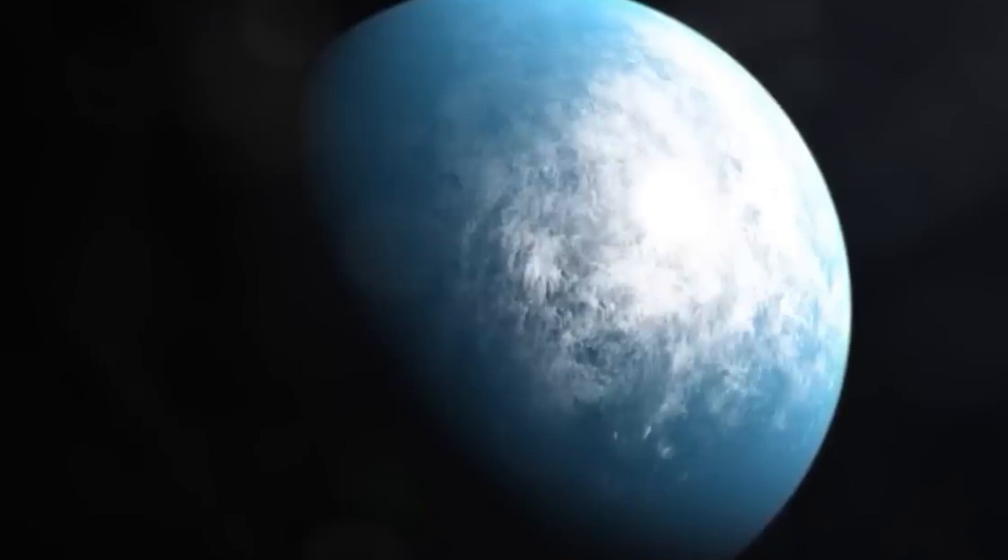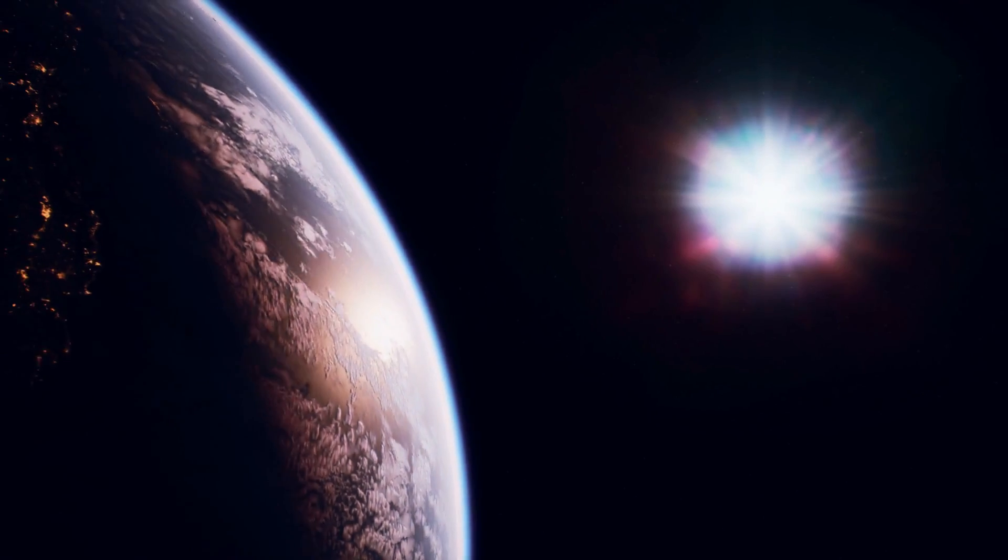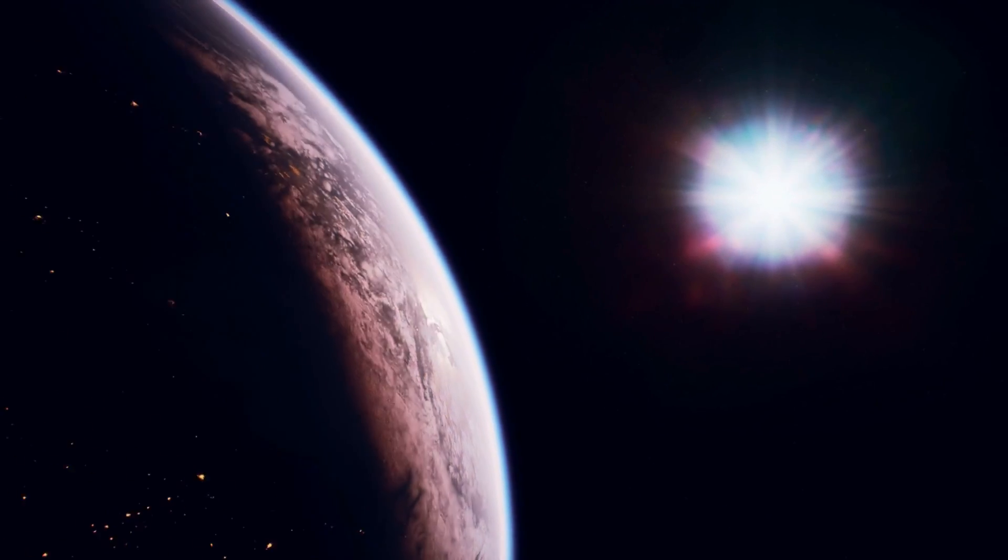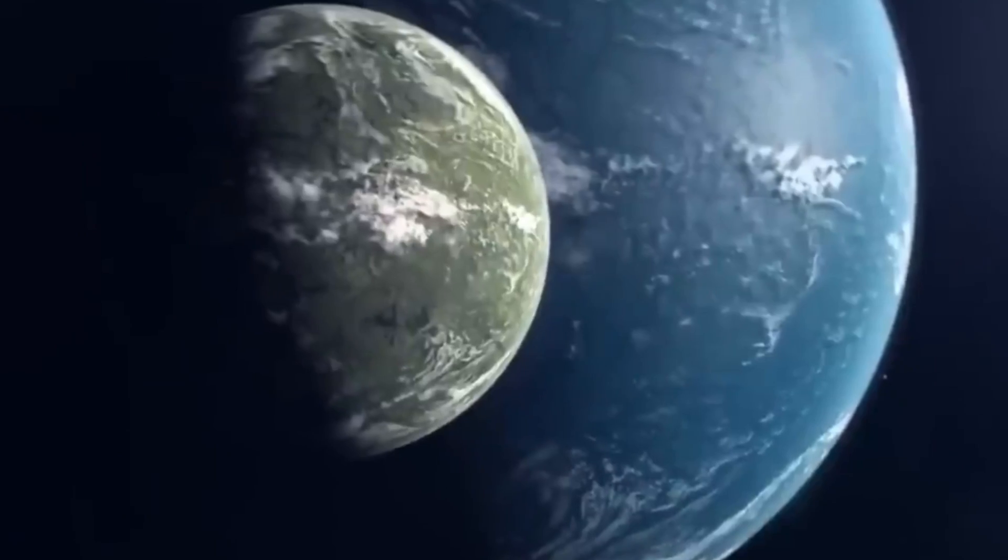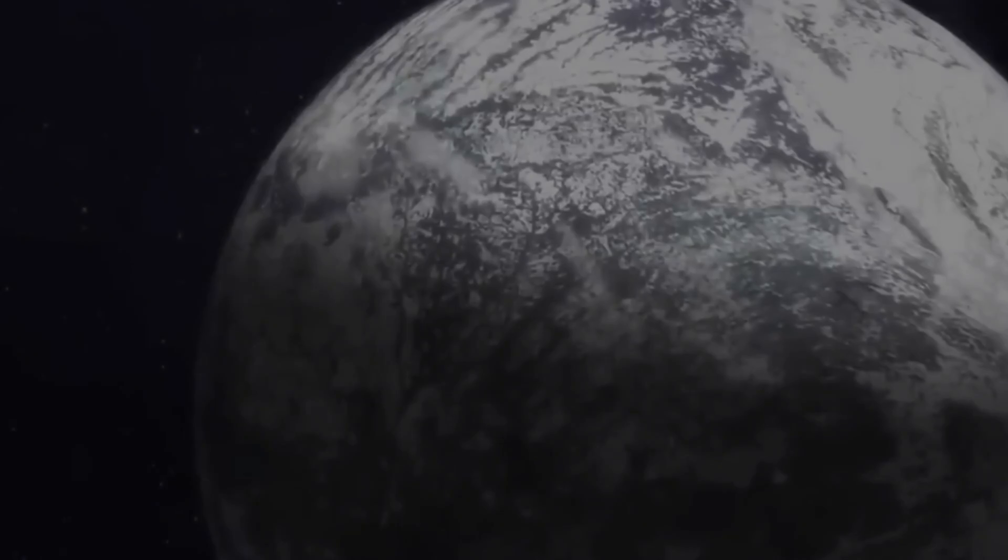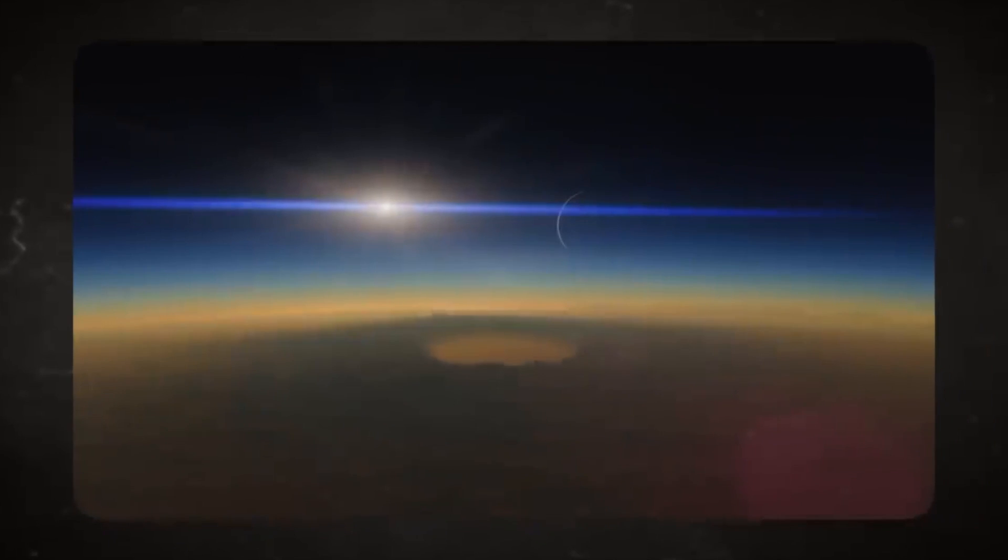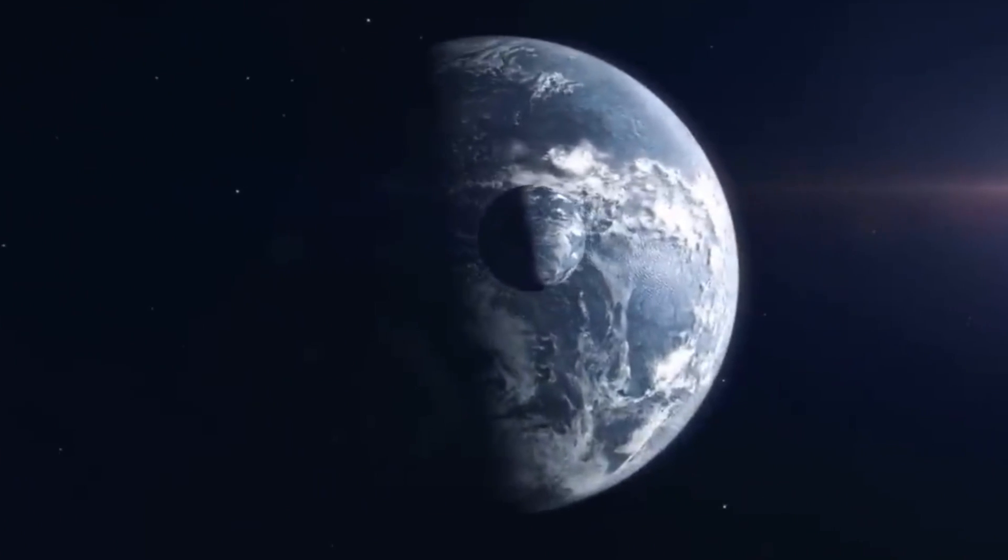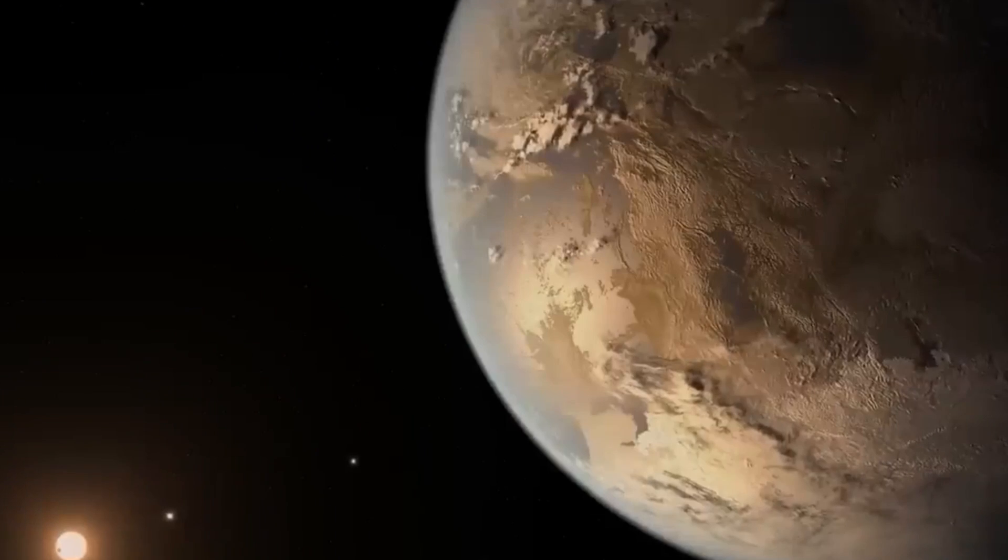Enter Proxima b, a planet located within this zone at a distance akin to Earth's orbit around the Sun, but appearances can deceive. Proxima b contends with intense ultraviolet radiation, hundreds of times more potent than the sunlight reaching Earth. This extreme radiation poses a threat even to hydrogen molecules, endangering the stability of essential elements like nitrogen and oxygen.